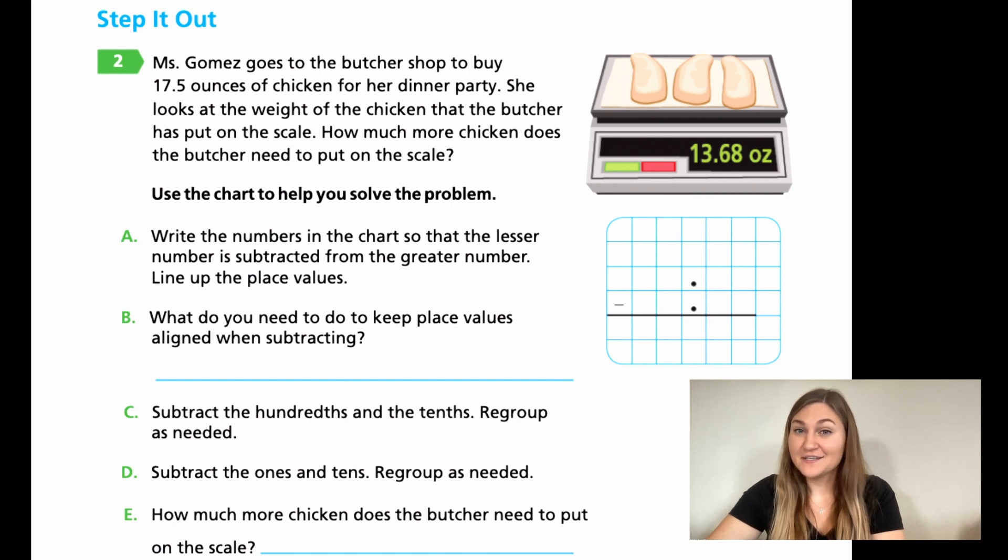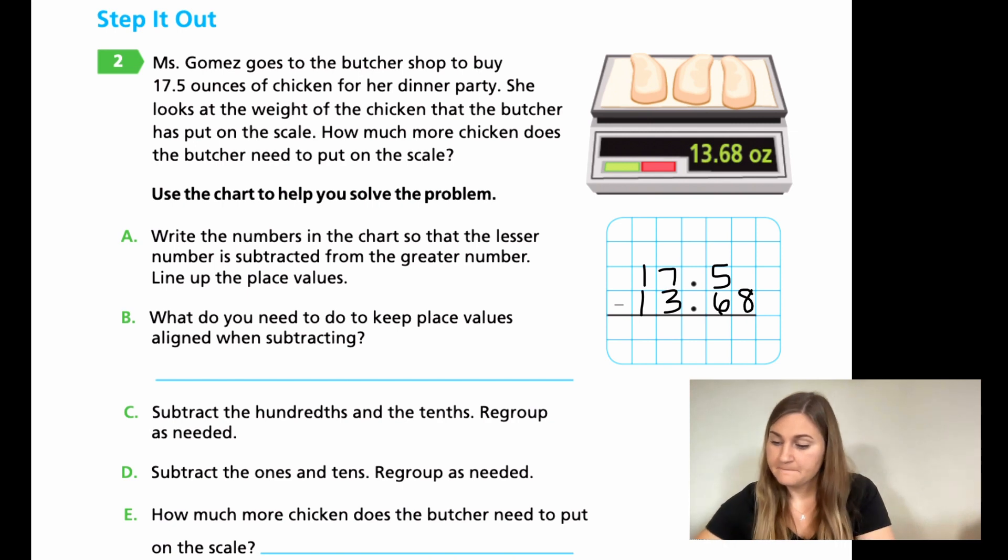Alright, let's solve these together. For A, my bigger number is 17.5 because 17 is more than 13. 13 has four digits. That just doesn't matter. So 17.5. I know that the 17 has to go in front of the decimal and the 5 has to go behind it. My smaller number is going to be the 13, and then the 6, 8 has to go after the decimal.